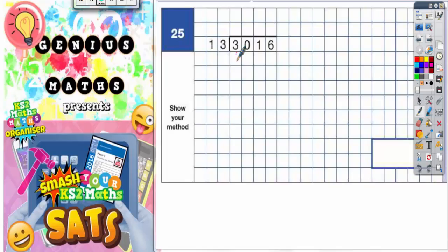Question 25. 3016 divided by 13. Now we're going to use the chunking method for this. So we need to subtract chunks of 13 away until there's nothing left.